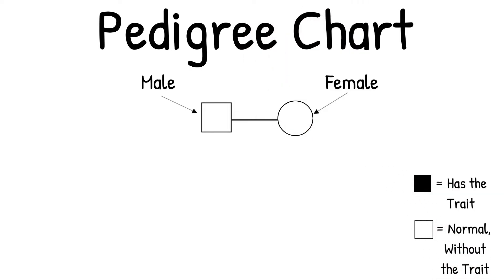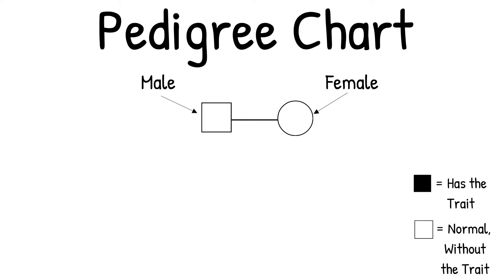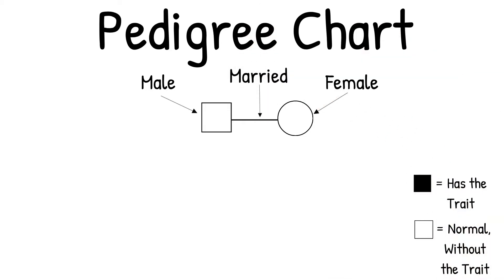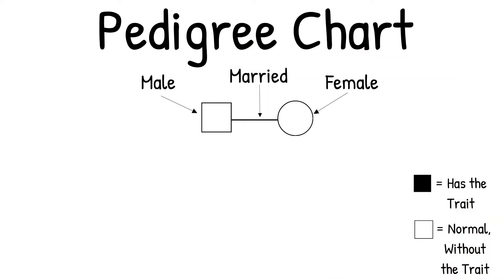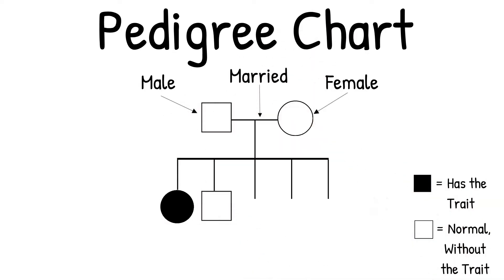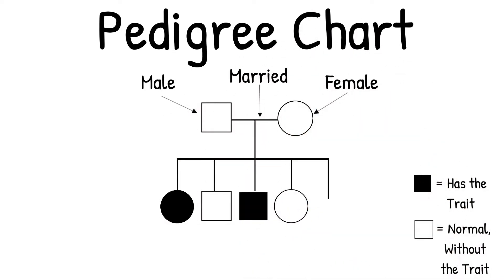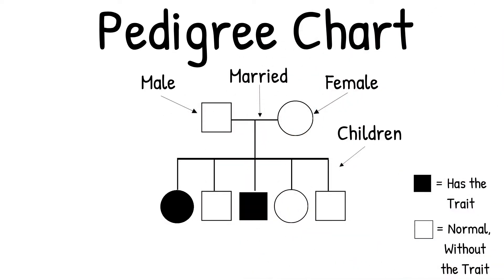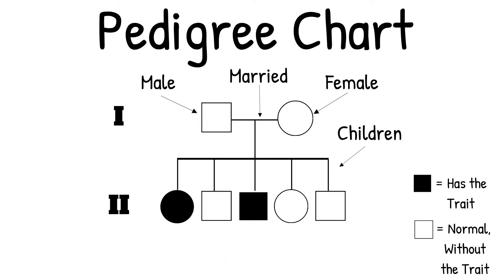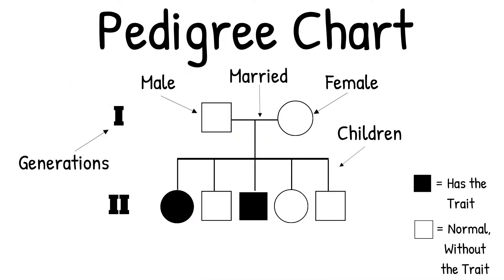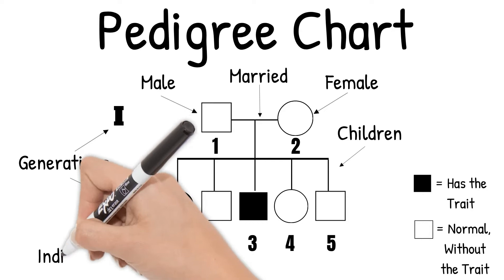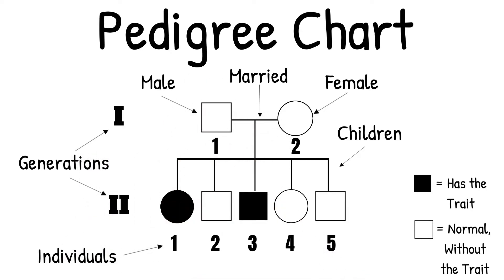If there is a line between a circle and a square, then those people are married or are a couple. Lines down from them show their children. Roman numerals are used to show the different generations, and numbers identify a person within the generation. Sometimes the numbers are implied and not written out, but either way they go from left to right.